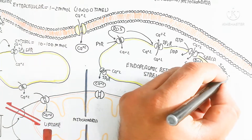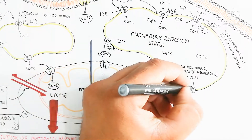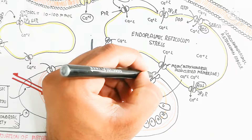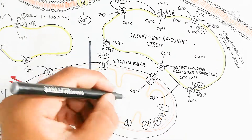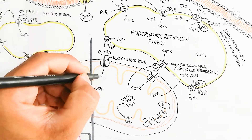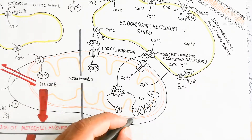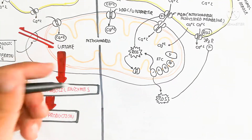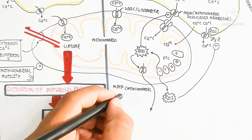ATP is used by SERCA — the sarco-endoplasmic reticulum ATPase — through active transport to move calcium back into the ER. However, the mitochondria-associated membrane leads calcium to move into the mitochondria. The increasing calcium in the mitochondria, along with reactive oxygen species, triggers more calcium efflux. This creates a positive feedback loop where more reactive oxygen species produce more calcium efflux.